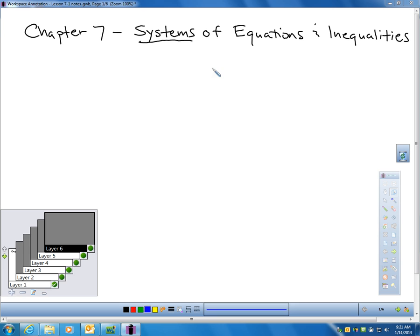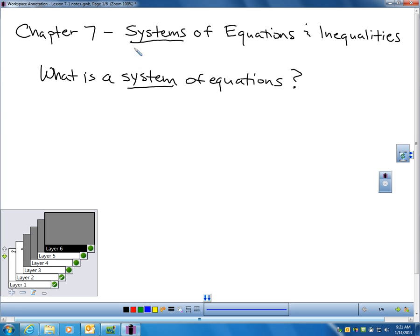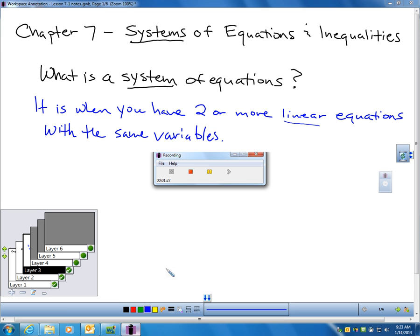We're starting Chapter 7 today, and this is called Systems of Equations and Inequalities. The first thing we need to do is get some basic vocabulary down. Let's talk about this word system, and what does that mean first, before we even get into our section. What is a system of equations? What does it mean to have a system? A system is the following: it's when you have two or more linear equations with the same variables. That's what a system is.